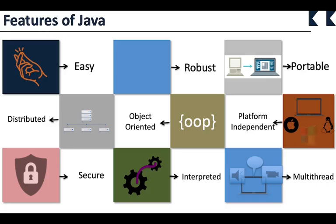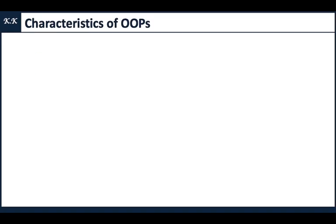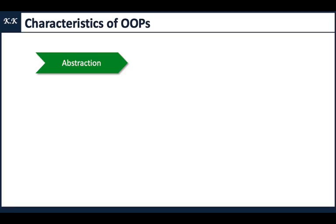Java is portable because, as mentioned, it is platform independent — we can write a program on one machine, transfer it to another, and it can run without any modification. The first characteristic of OOP is abstraction. Abstraction in Java is achieved through the use of abstract classes and interfaces. It is a fundamental concept in OOP that allows you to create generalized classes and define common behaviors without specifying the implementation details.